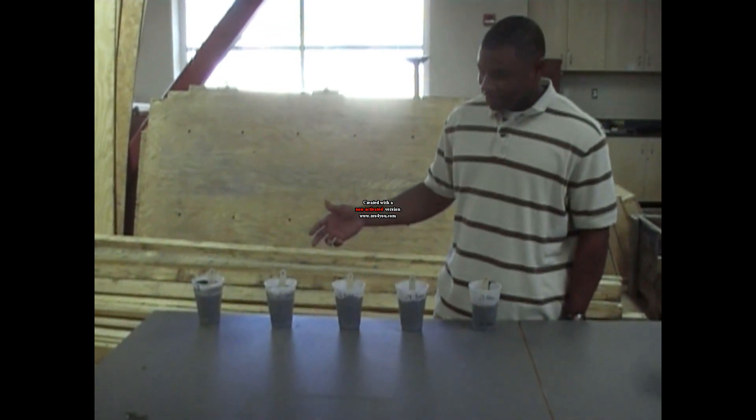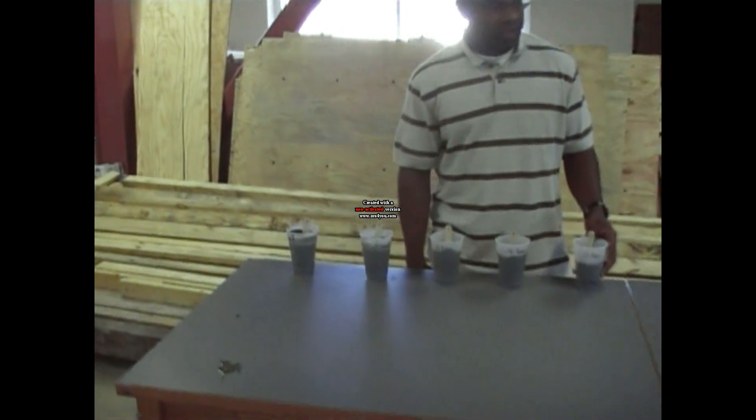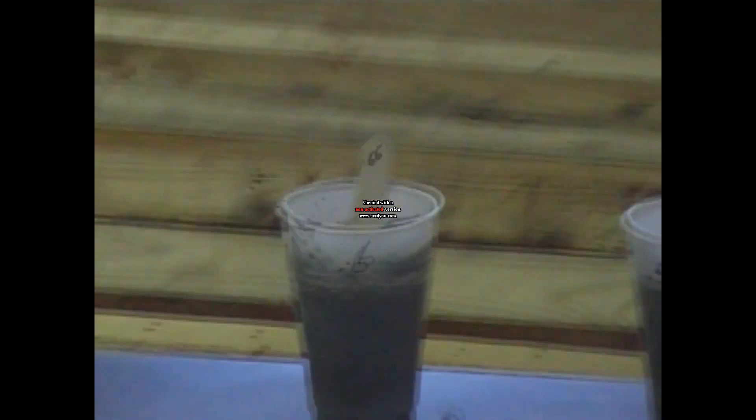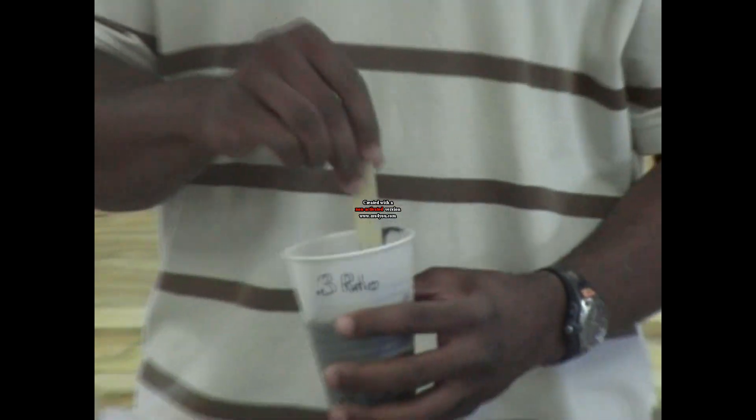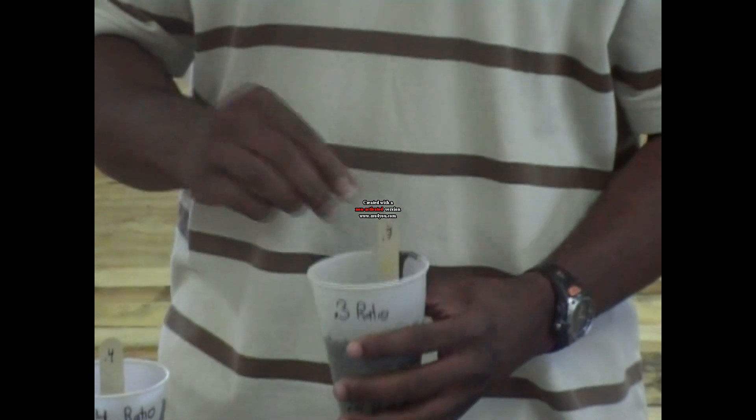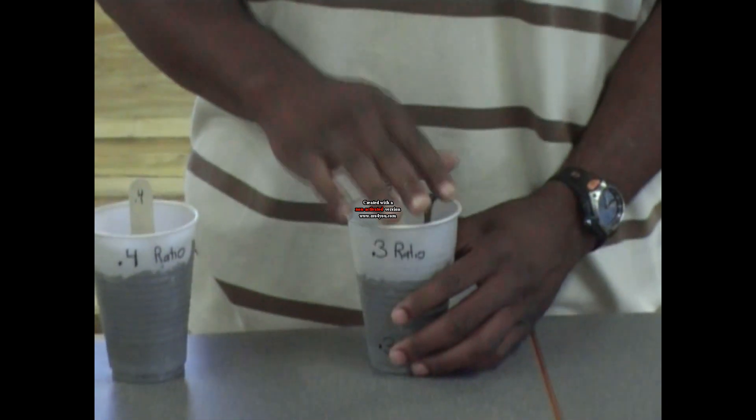We have five different mixes, starting from the 0.7 down to the 0.3. Each of these varies in consistency. As you can see with the 0.3, it's a little bit harder to mix, and almost you can turn it upside, invert it completely, and it won't come out. This type of mix will be more difficult for most of the concrete layers to work with, so this will be less preferred for them, but more preferred when it comes to strength.